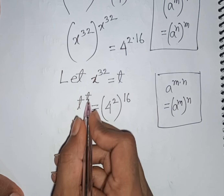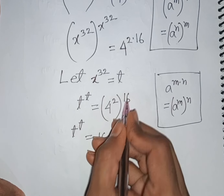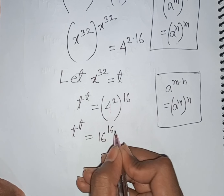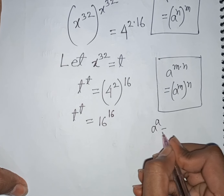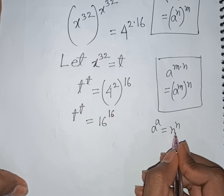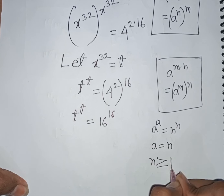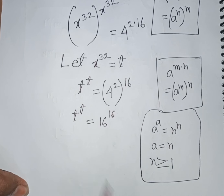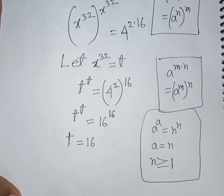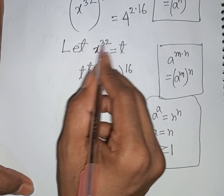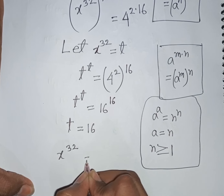Applying the rule that if a power a equals n power n, then a equals n. Comparing t power t equals 16 power 16, we get t equals 16. Remember that x power 32 was substituted by t, so x power 32 equals 16.